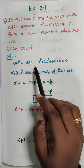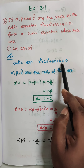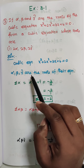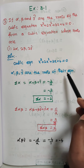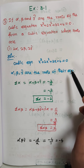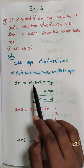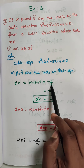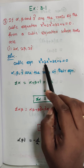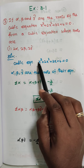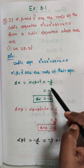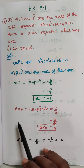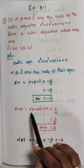So the cubic equation x³ + 2x² + 3x + 4 = 0 has 3 roots: alpha, beta, gamma. First I am going to find summation alpha, that is alpha + beta + gamma, which equals the formula -b/a. Here b = 2, a = 1, so minus 2 by 1 equals minus 2. That is summation alpha.